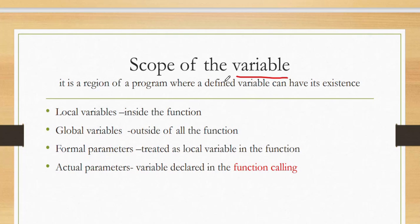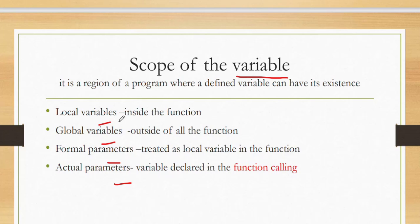Scope of the variable means the region of a program where a defined variable can have its existence — where I can access it. Scope of the variable is four types: local variable, global variable, formal parameters, and actual parameters. Local variables are variables that can only be accessed inside the function. For example, I am declaring some function void add.